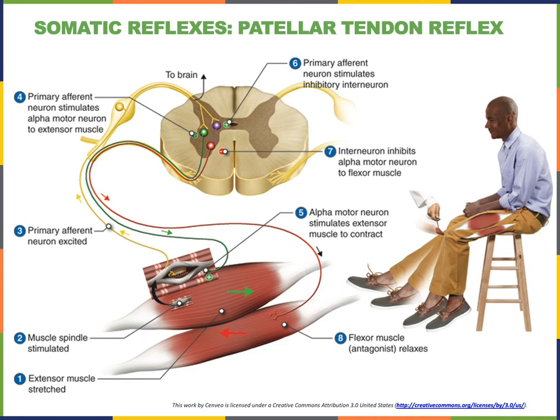This is an ipsilateral reflex because the effector muscle, the quadriceps femoris, is on the same side of the body — the same left or right side — as the receptor, the muscle spindle, because the muscle spindle is located within the very same muscle, the quadriceps femoris, which is also the effector in this example.